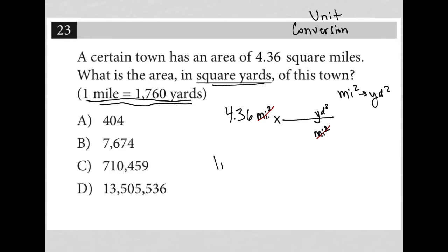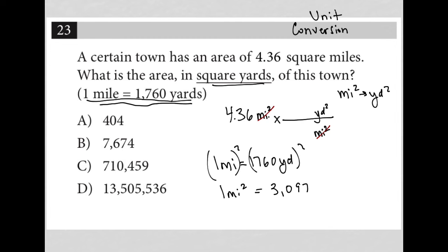So I'm going to take what I know: one mile equals 1,760 yards. And I'm going to square both sides. So if I square this side, it becomes one mile squared. If I square this side, I need to go to my calculator and figure out what 1,760 squared is. And what I get is that this is equal to 3,097,600 yards squared. So my denominator is 1 mile squared, and my numerator is not 1,760 — it's actually 3,097,600.